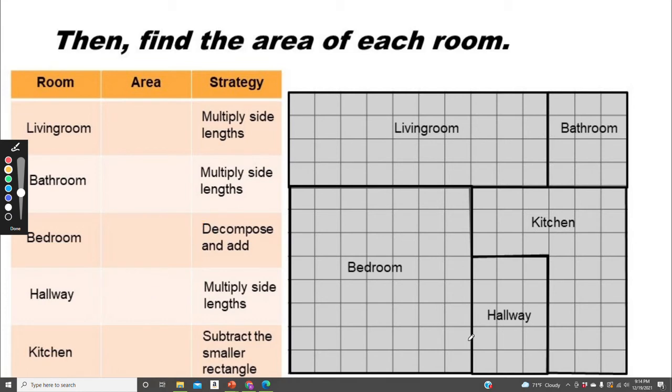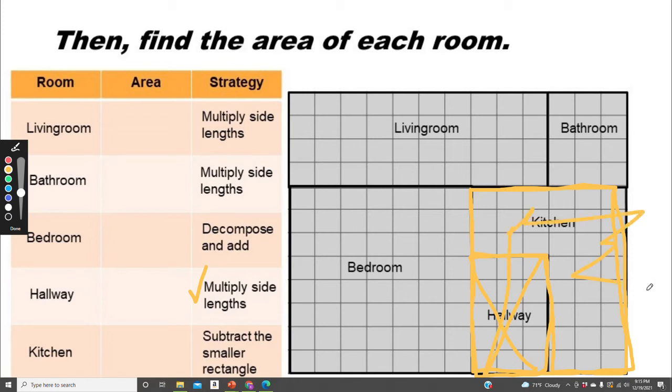For the hallway, it's a rectangle, so we can multiply the side lengths. But for the kitchen, this is an odd-shaped figure. It's not a rectangle. For this one, I'm going to look at the outside of the complete rectangle. That would be the kitchen and the hallway together. And I'm going to subtract what I know the area to be of the hallway to find the kitchen. Subtract the smaller rectangle.